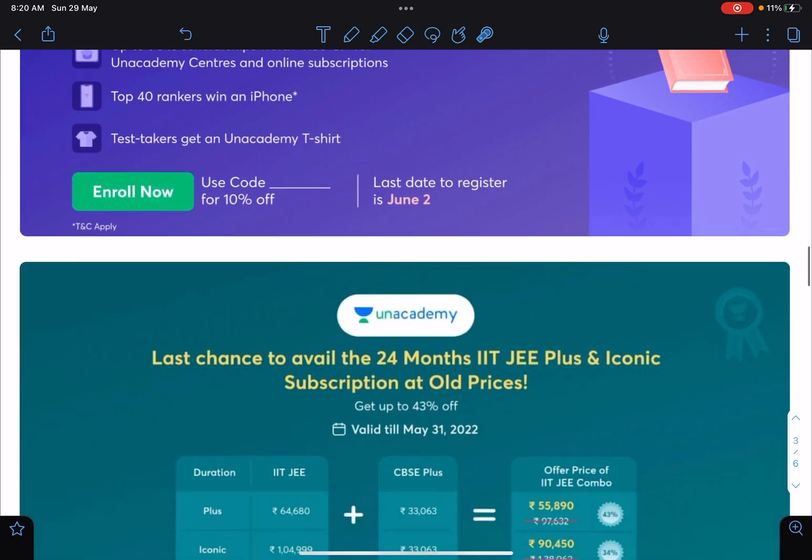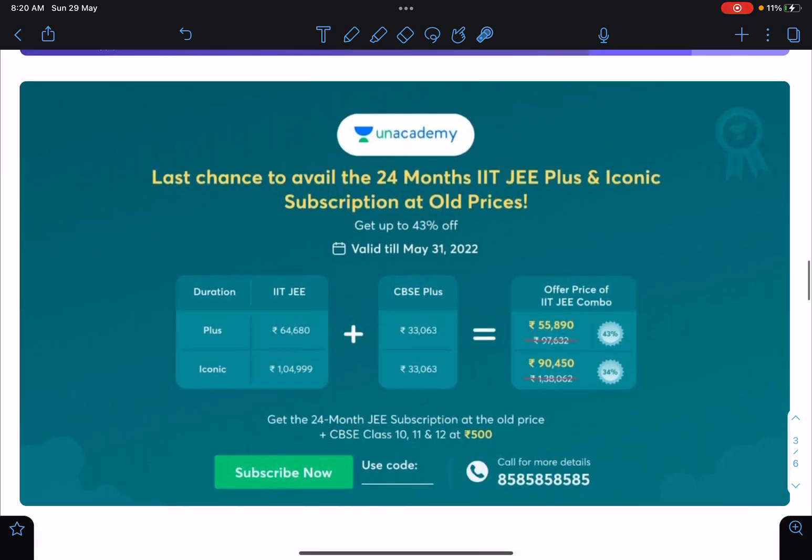Currently, this offer is going on at Unacademy. Plus subscription with CBSE combined has 43% off already, and Iconic subscription with CBSE Plus is having 34% off. Here also you can use the code 'Nitin Sir' in order to connect with me on Unacademy. That's it, guys.